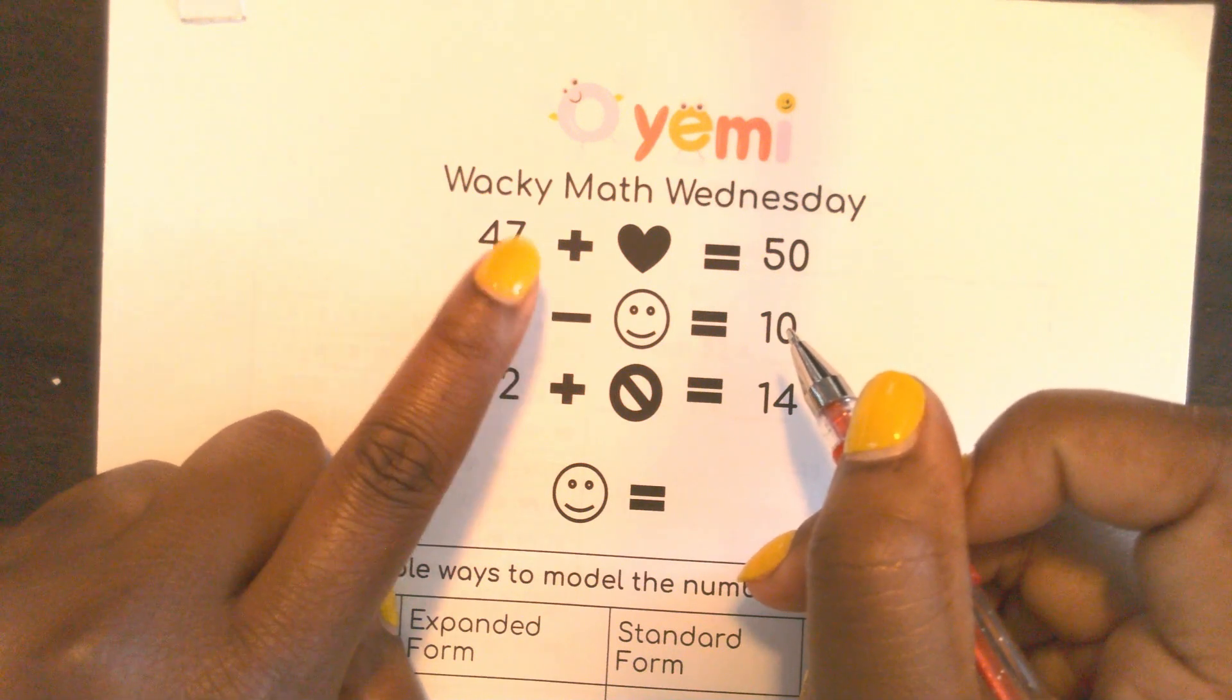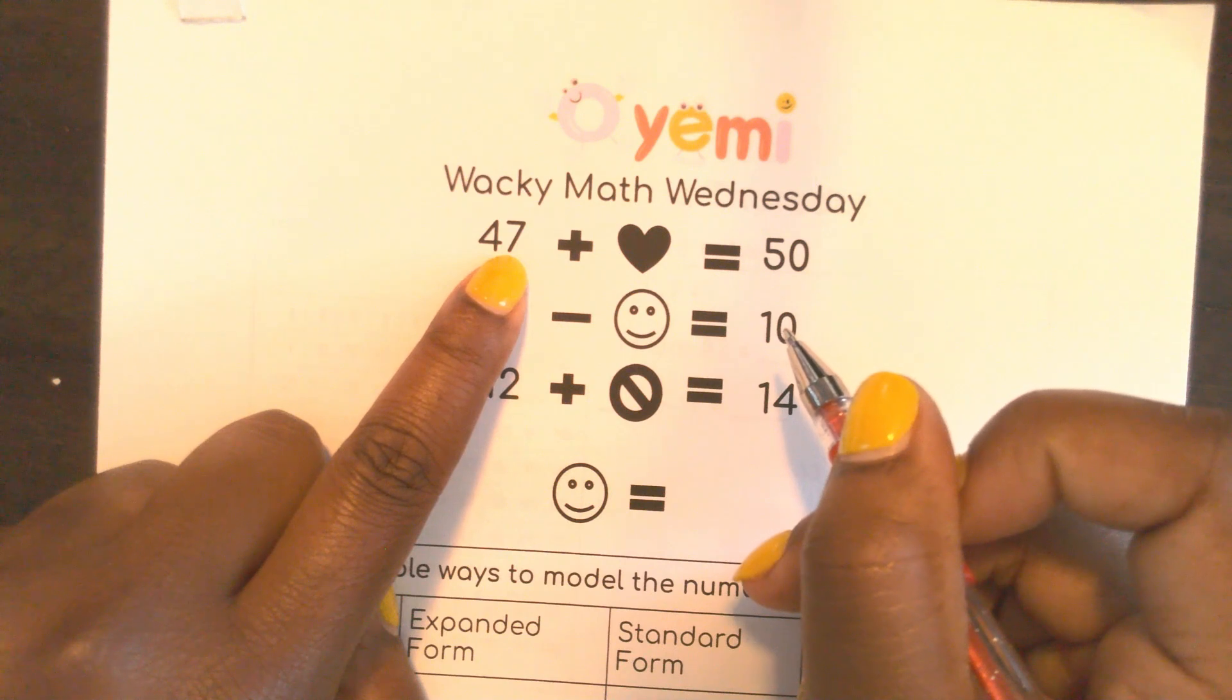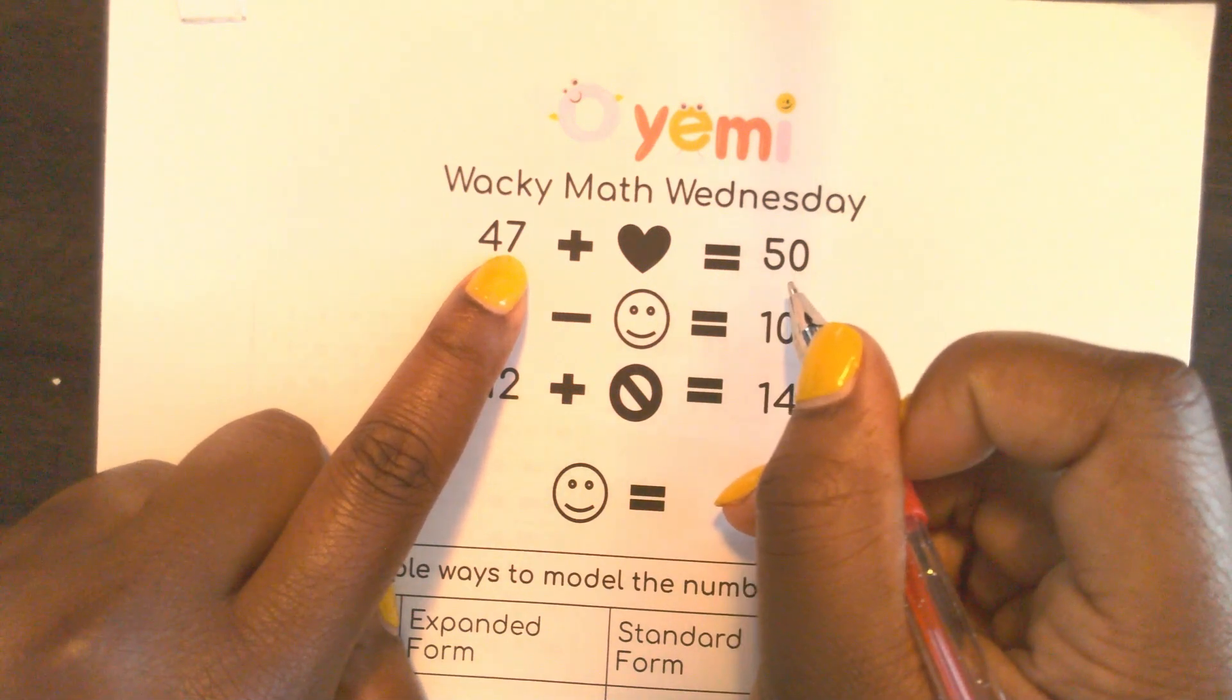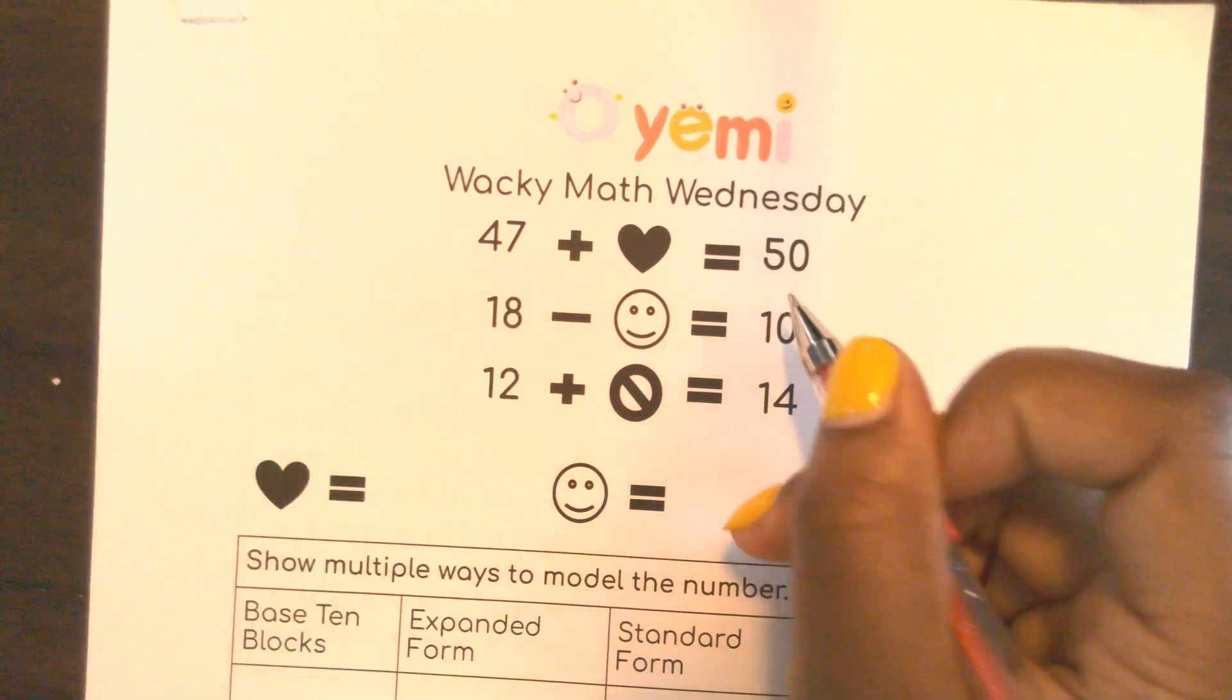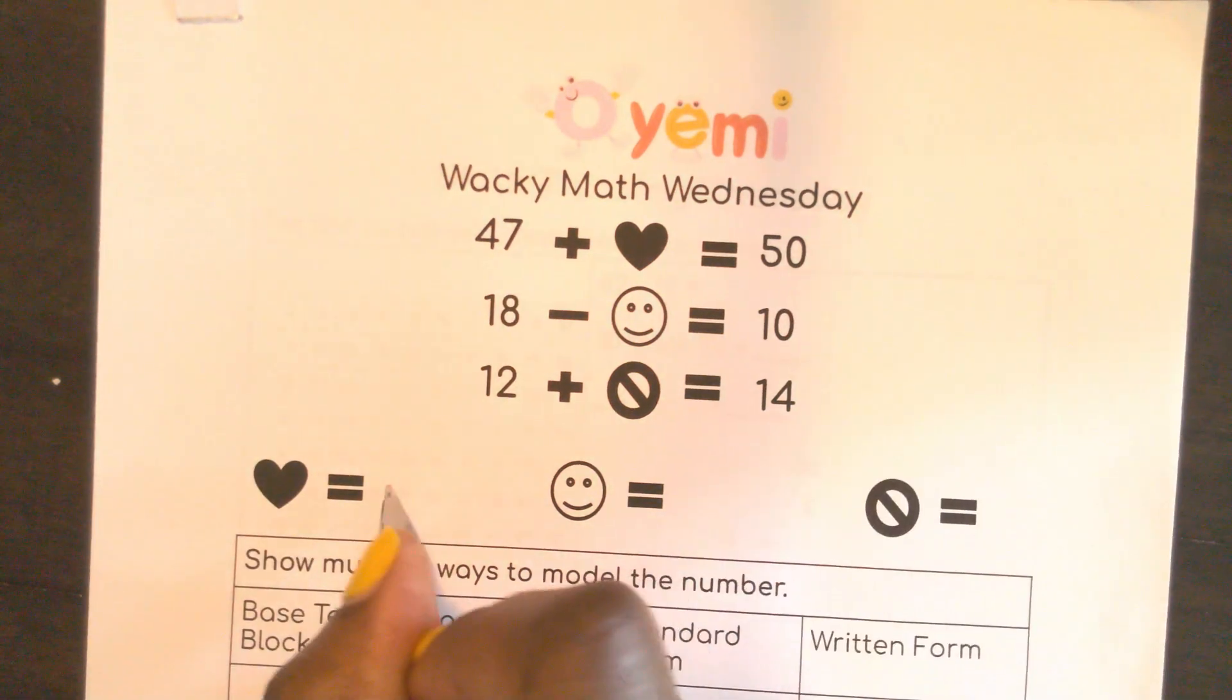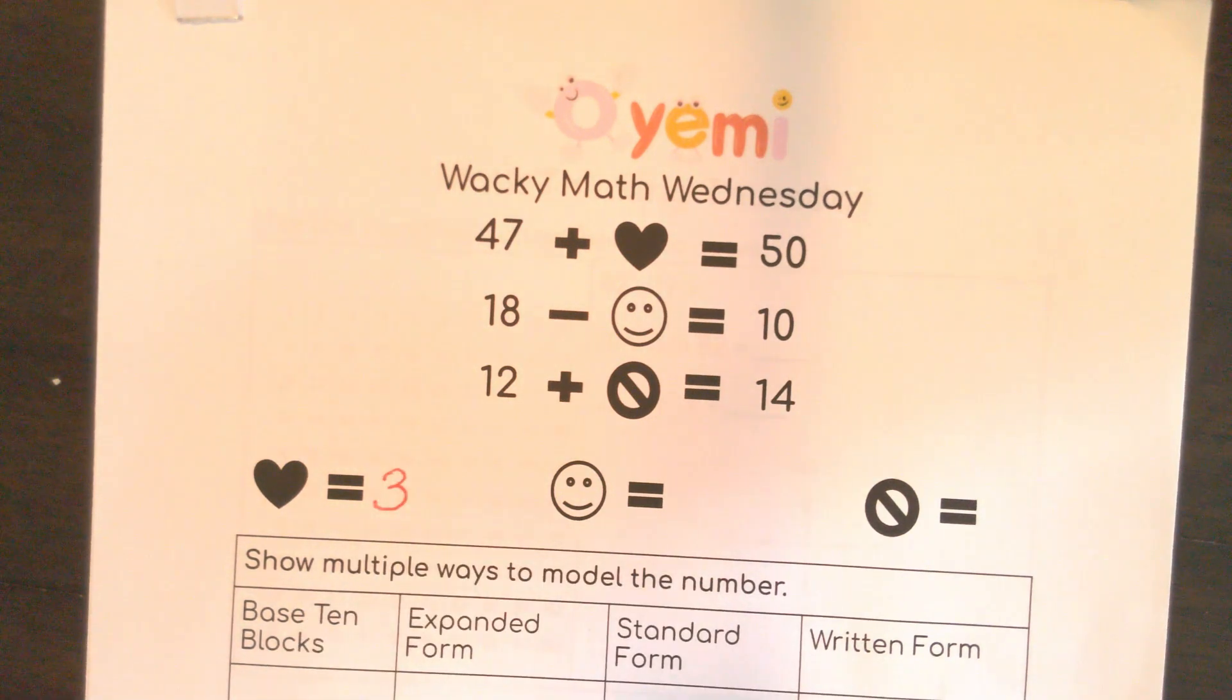How many more ones do I need to get to the next 10? Seven plus what equals 10? Three. So you need three plus 47 to equal 50.